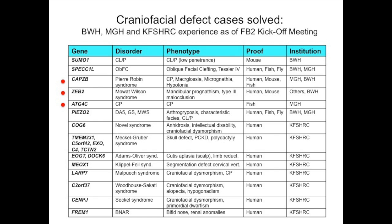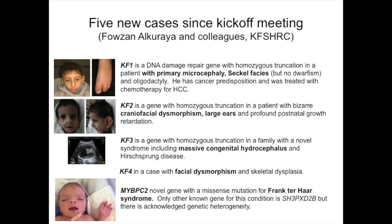What we've begun to realize is that as you accumulate enough genes, you begin to see connections between them that you wouldn't otherwise have noticed. For example, as Eric will discuss, CAPZB and SPEC1L seem to interact within the same functional pathway. More recently, we found that PESO2 may interact with the pathway in which CAPZB resides.